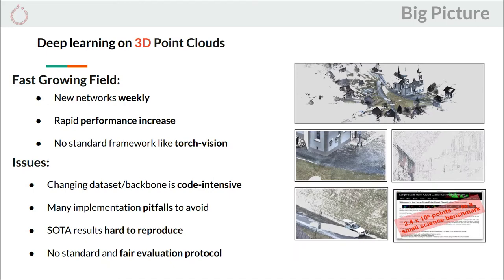For starters, adding new datasets and changing backbone networks can be quite code-intensive, and implementations must avoid several key mistakes in order to remain valid and efficient. State-of-the-art results are also hard to reproduce, because modern networks tend to be complex and rely on many implementation tricks. Finally, there is no standard evaluation protocol, which makes it hard to compare different approaches even on the same datasets.